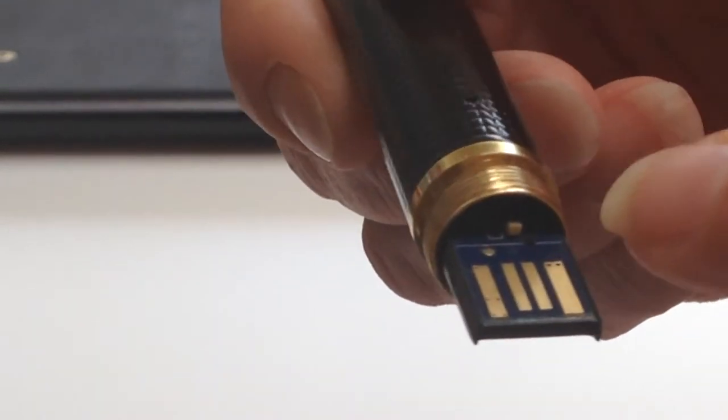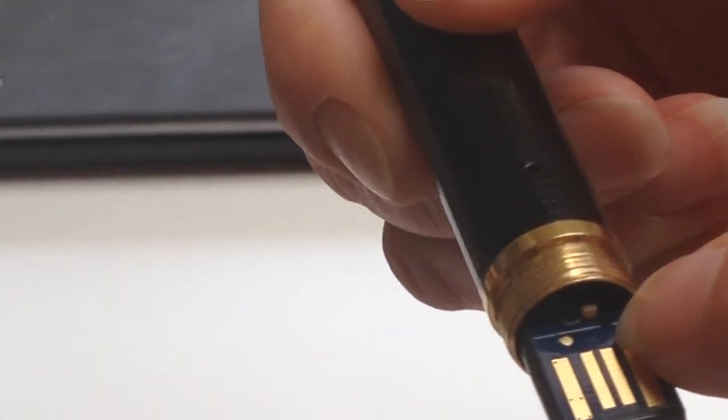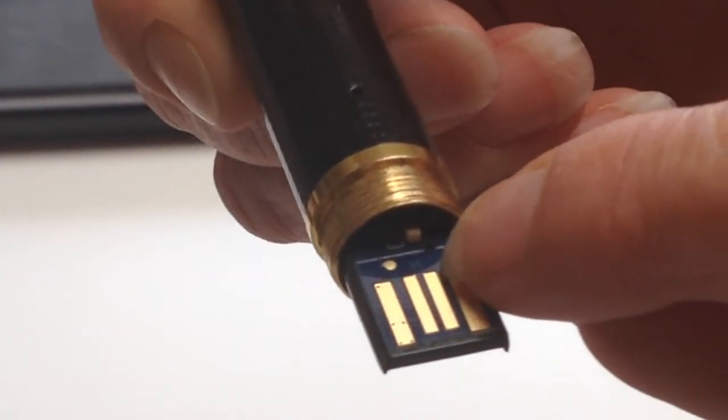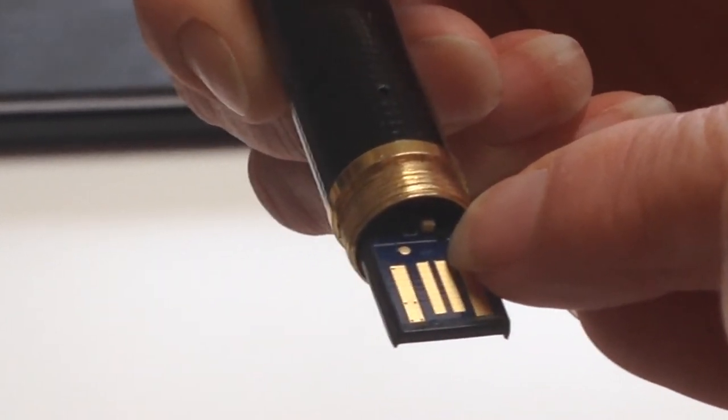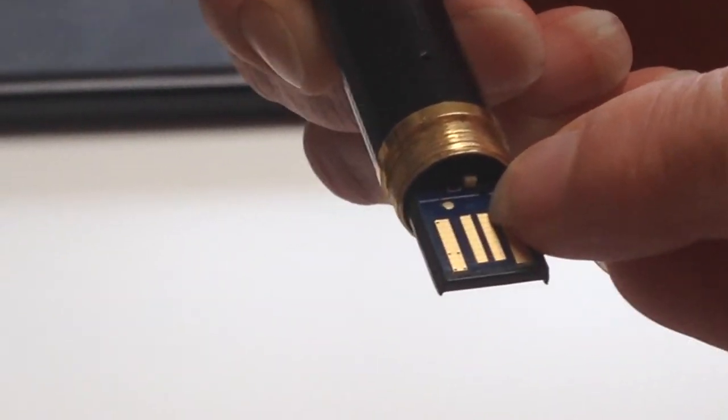Just above the USB we have the mode switch—this little tiny white switch—and this sets it between photo mode and video mode. It's on the right-hand side at the moment, which means it's in photo mode.